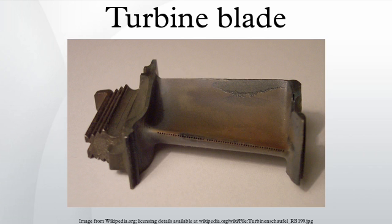Impingement cooling is a variation of convection cooling that works by hitting the inner surface of the blade with high velocity air. This allows more heat to be transferred by convection than regular convection cooling does. Impingement cooling is used in the regions of greatest heat loads. In the case of turbine blades, the leading edge has maximum temperature and thus heat load. Impingement cooling is also used in the mid-chord of the vane.